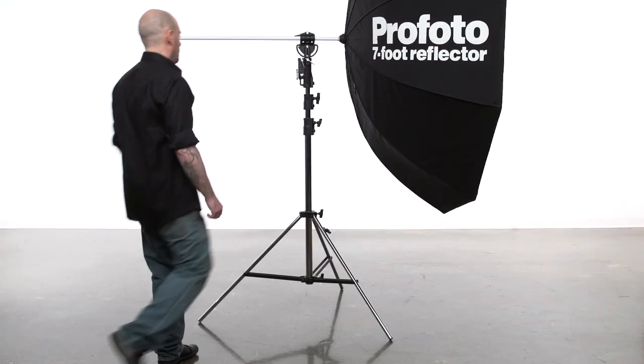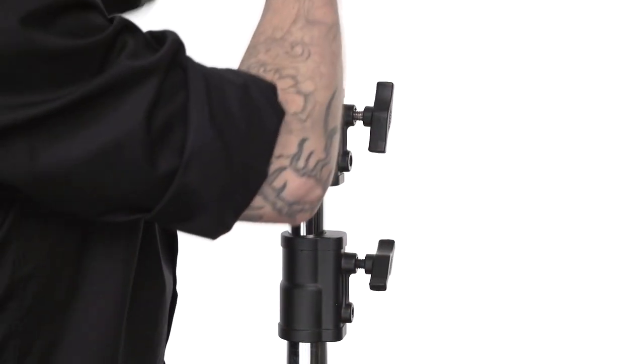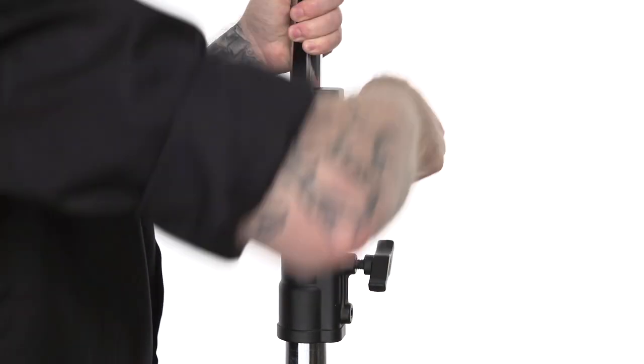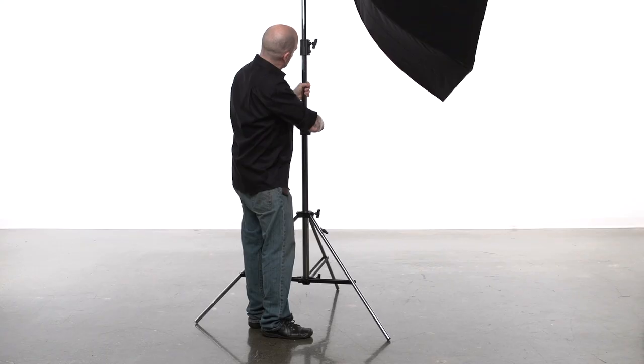To adjust the height of your stand, loosen the knob on top of the second riser section. Make sure you always keep a firm grip on the riser section to support the load. Adjust to the desired height and tighten the knob until snug.